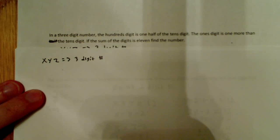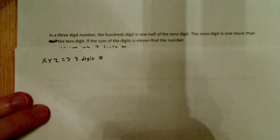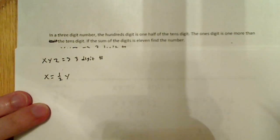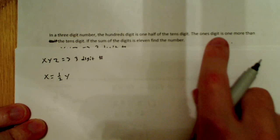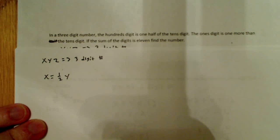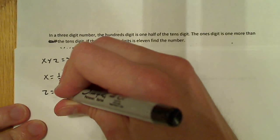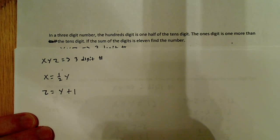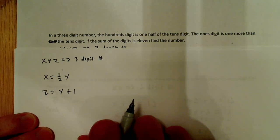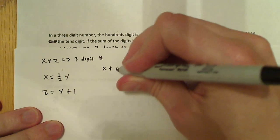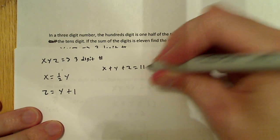The first part says the hundreds digit is one-half of the tens digit. The hundreds digit is x, so x is equal to one-half y. And the ones digit is one more than the tens digit, so z is equal to y plus 1. The final piece of information says the sum of the digits is 11, so x plus y plus z is equal to 11.